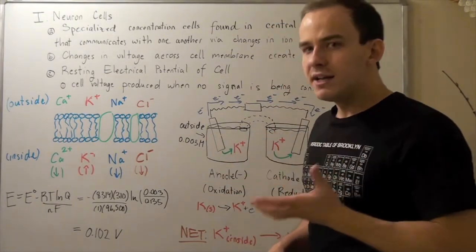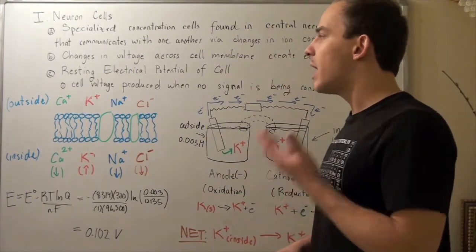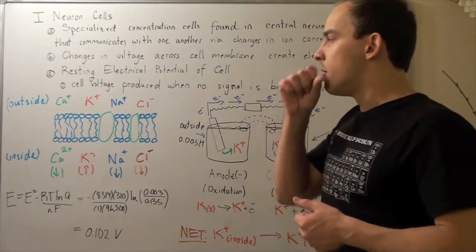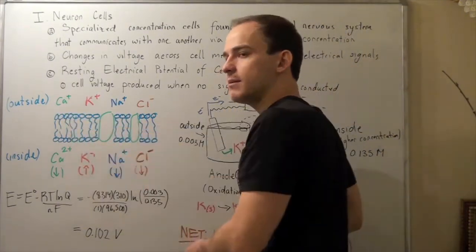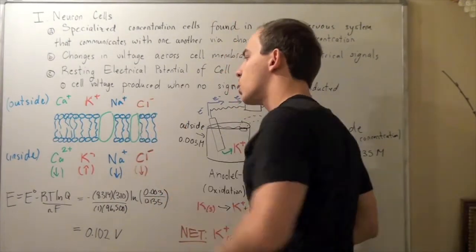Let's examine the different types of ions that are present within our body, within our cell. We see that we have calcium, we have potassium, we have sodium, and we have chloride.